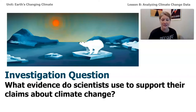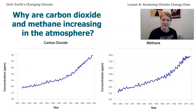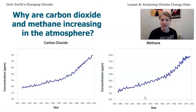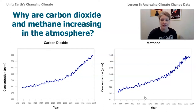The question we're investigating today is: what evidence do scientists use to support their ideas and claims about climate change? In the last couple of lessons, we looked carefully at some data and used the sim to see a connection between carbon dioxide molecules in the atmosphere and the amount of energy absorbed by Earth's surface. We also saw that with methane. These two graphs show that concentration in parts per million is increasing over time.